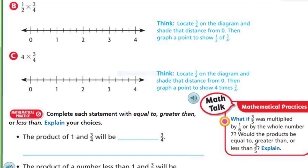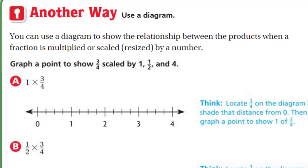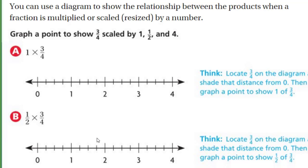Let's look on this page now. We can use a diagram to show the relationship between the products when a fraction is multiplied or scaled, that's what we call scaled or resized, by a number. Graph a point to show three quarters scaled by one, by one half, and four. If we start off with three quarters and we multiply by one, I'm going to go ahead and show that to three quarters right there. The line is basically going across straight across right to that spot, and that shows the three quarters. Locate three quarters on the diagram, shade the distance from zero, and then graph a point to show one of three quarters.